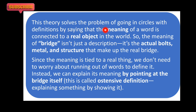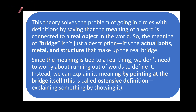This theory solves the problem of going in circles with definitions by saying that the meaning of a word is connected to a real object in the world. یہ تھیوری ہمیں help کرتی ہے کہ ہم meaning کو circular form میں define نہیں کرتے۔ آپ جب کہتے ہیں 'laptop' تو آپ کہتے ہیں it's a device used for internet, googling, typing, etc. — and if you then ask 'what is a typing thing,' you get 'laptop' again, which is circular. Referential theory saves us from this — we point out the referent that exists in the real world.